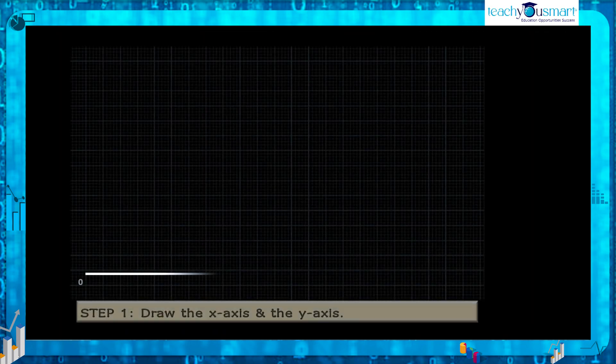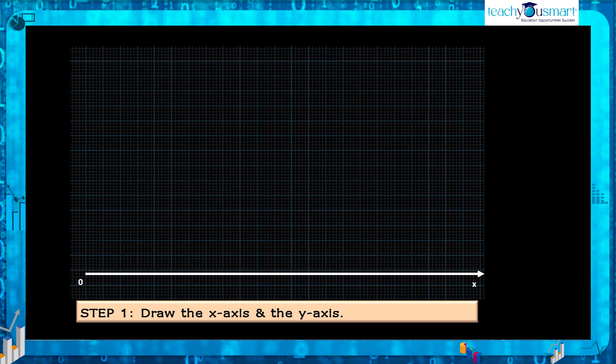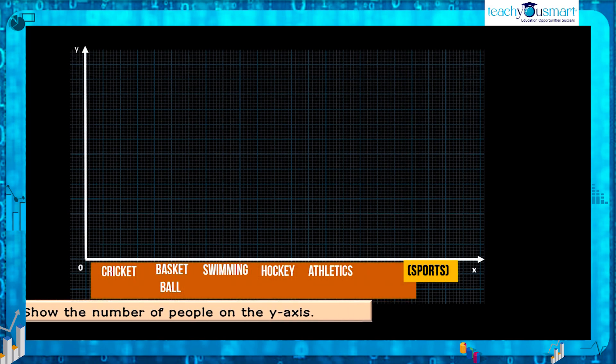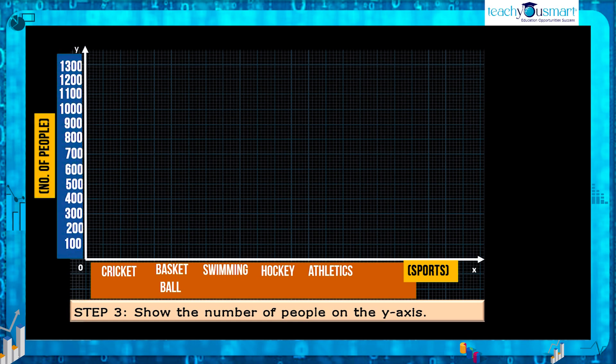First draw the x-axis and the y-axis. Mark various sports on x-axis. Then mark the number of people on y-axis.